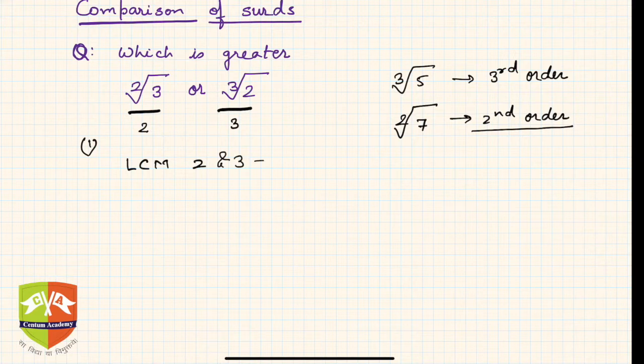Let us convert both into order of 6. Square root of 3 can be written as 3 to the power 1/2. To convert this into order 6, multiply 1/2 by 3/3, giving 3 to the power 3/6, which is sixth root of 3 cubed, equal to sixth root of 27.